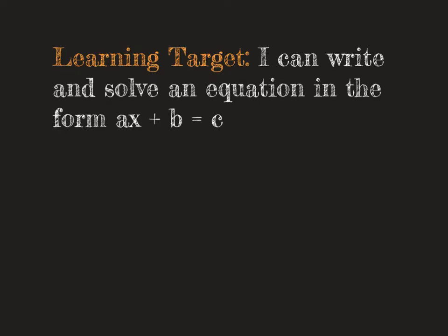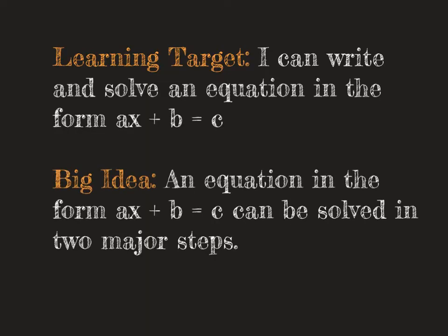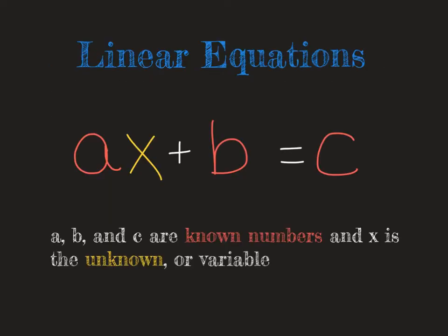So by the end of the video, you'll be able to take a word problem and write and solve an equation in the form ax plus b equals c. And you'll know that any equation that's written in that form can be solved in two major steps. It's important to note that equations that are written in the form ax plus b are called linear equations. And you'll use these a lot in math going forward. And something here to pay attention to is that when we have a, b and c, those are our known numbers. And then x is going to remain our variable or our unknown. That'll be something that changes.